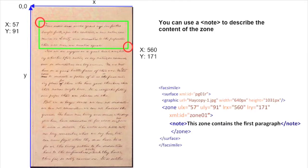So how do you do that? Once you've got this encoding, you can, inside the zone, put an element note in which you explain the content of this zone. That is when you want to annotate an image — when you want to describe it. For instance, if you are an art historian, you can use this to annotate the beautiful miniature of a medieval manuscript, or to describe what is in there.